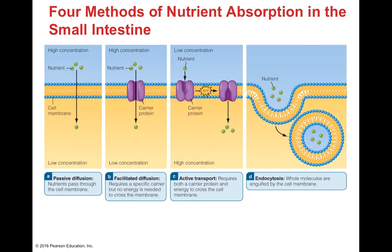In passive diffusion, nutrients pass directly through the cell membrane from high to low concentration with no energy required. In active transport, nutrients move against the concentration gradient, requiring both a carrier protein and an ATP molecule — exchanging ATP for ADP to release energy and drive transport across the membrane. In endocytosis, the entire nutrient molecule is engulfed by the cell membrane, forming a vesicle that is pulled into the cell.